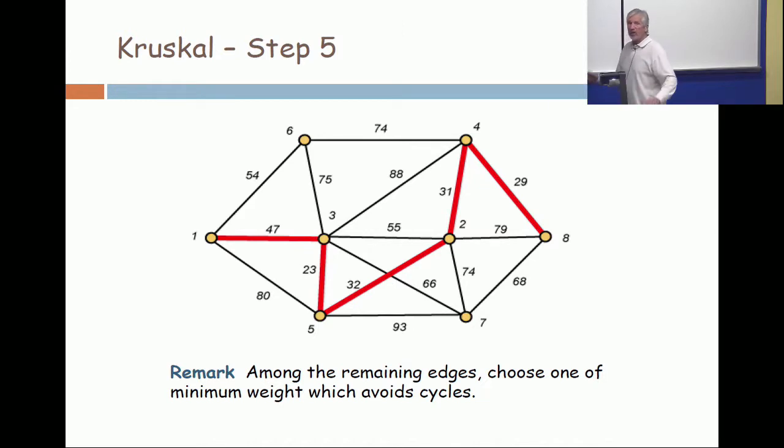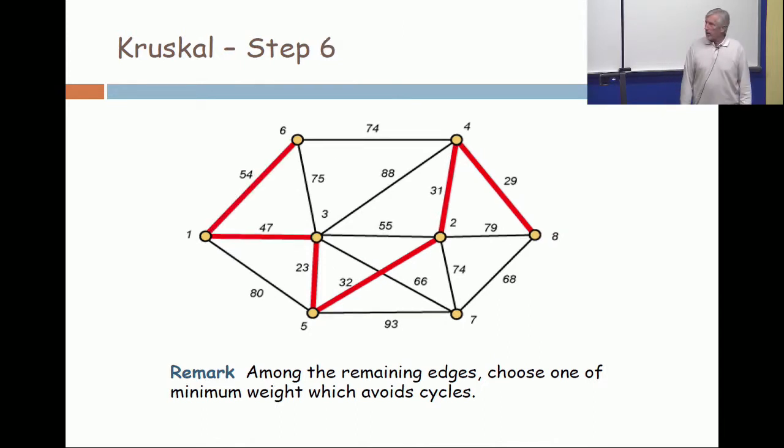Okay, now notice that one of the components of the forest that I'm building thus far consists of all those edges, and there are two other components. Those are loose vertices. But in general, when you're at an intermediate step in the implementation of Kruskal's algorithm, I remind you that in general, you have a forest with many components. This example only has eight vertices, so I can't get many, many components.